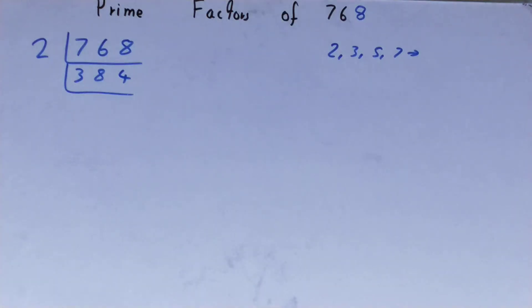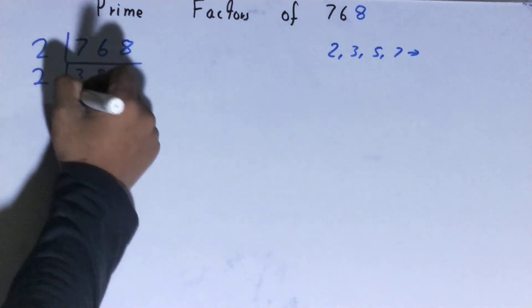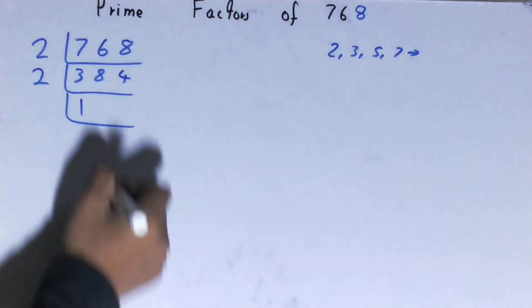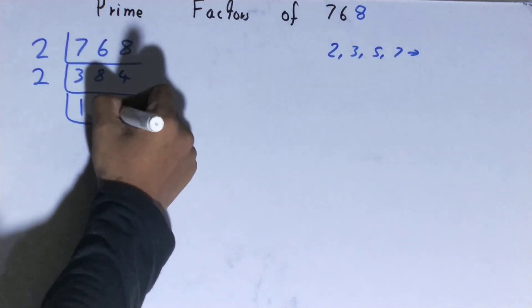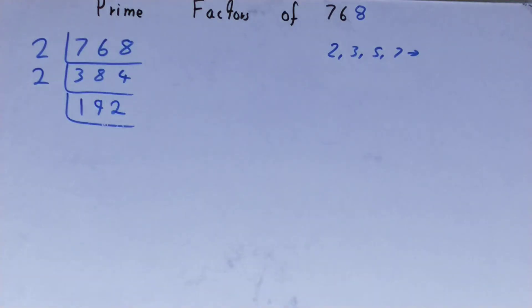Is 384 divisible by 2? Yes, it's also even, so divide it and you'll be left with 192. Is 192 divisible by 2? Yes it is, so divide it and you'll be left with 96.